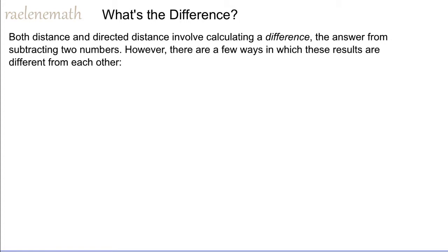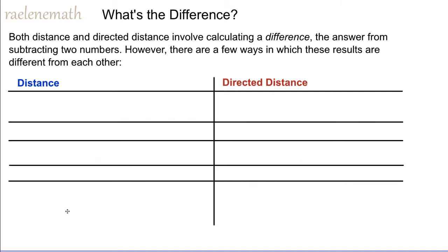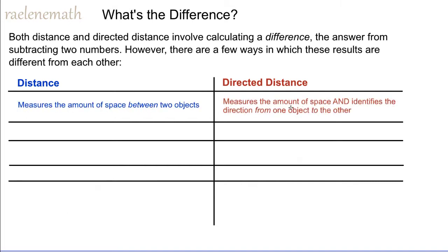What is the difference then between distance and directed distance? They both involve subtraction and their answers both involve a difference, but in one case we're allowed to have a negative and in the other case we're not. Distance measures the amount of space between two objects, whereas directed distance measures the amount of space between the objects and also identifies the direction from one object to the other. The directed distance is concerned with starting at one initial point and moving to a final point, whereas that's not important for distance. So the direction doesn't matter for distance, but it does for directed distance.